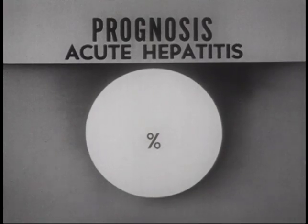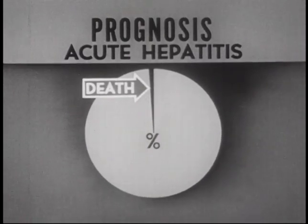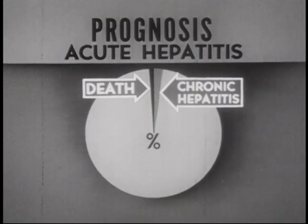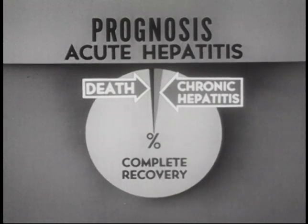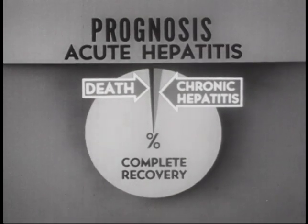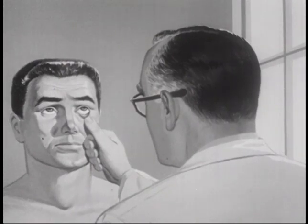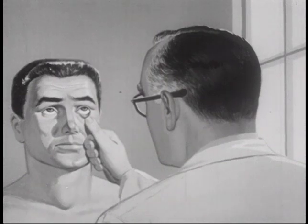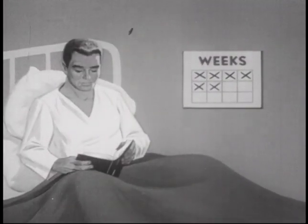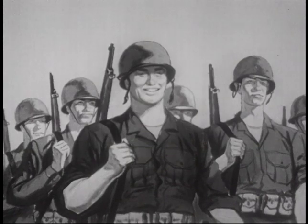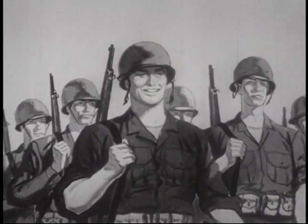The prognosis of acute hepatitis is good. Only a fraction of one percent of patients die during the acute stage. About two percent have persistent chronic hepatitis at the end of a year. The rest recover completely. Viral hepatitis is a common disease in the Army. Diagnosis is seldom difficult if the possibility is considered. The disease is self-limited; the course is prolonged. There is no specific treatment. Bed rest must be maintained until evidence of active disease has subsided. Strict adherence to this regimen will decrease the incidence of acute relapse and the development of chronic hepatitis.